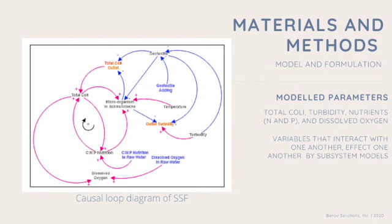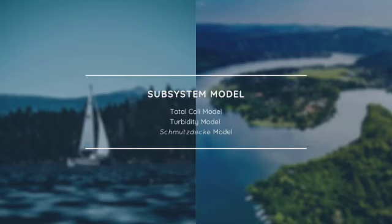Model and formulation used in this research is by using model parameters which are total coli, turbidity, nutrients and dissolved oxygen. On the left side is the figure of the causal loop which shows variables that interact with one another and affect one another by subsystem models. For subsystem models, there are three being used: total coli model, turbidity model and smootcher model.